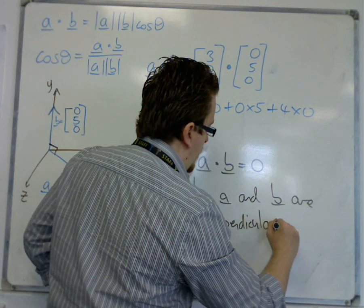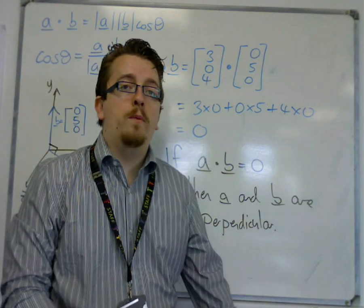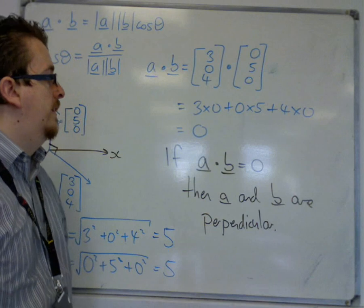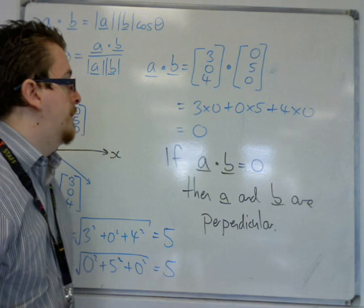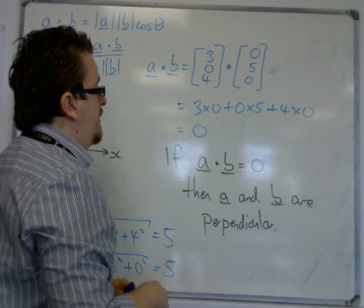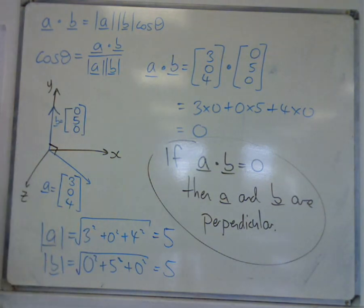So they meet at right angles. And we will be using this fact later on when we look at the foot of the perpendicular, the coordinates of the foot of the perpendicular, look at the shortest distance from a point to a line. But this is a key idea that really you should have in your toolkit.